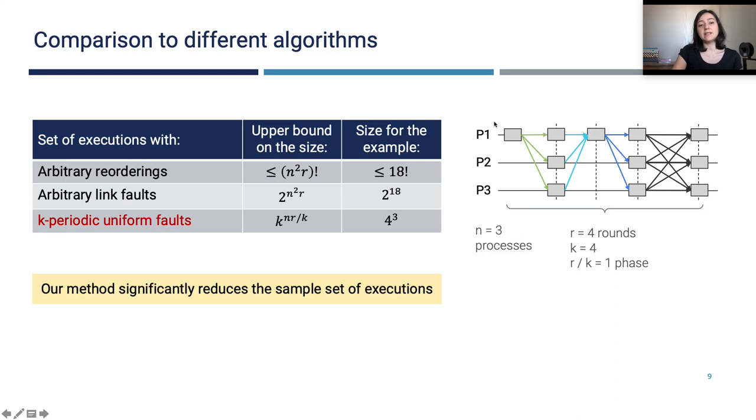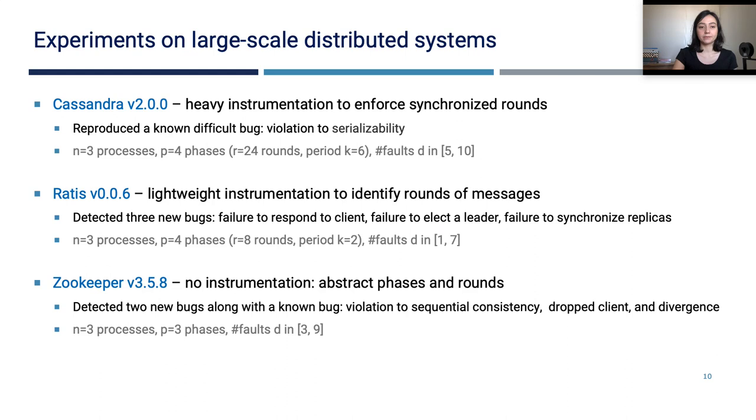Our algorithm sampling from k-periodic uniform faults provides a much smaller sample set. So in a phase, we isolate p1, p2, or p3 in one of the R rounds. So each process, each of these three processes can be dropped in one of those R rounds. And at the end of the phase, they will be recovered. So you see that the sample set size is much smaller in relation to the existing algorithms.